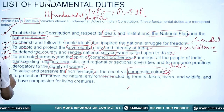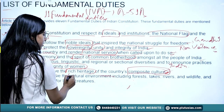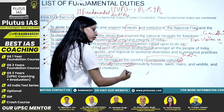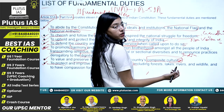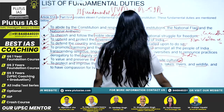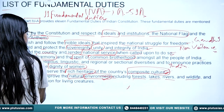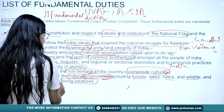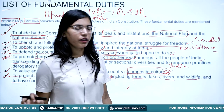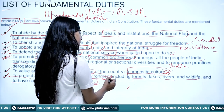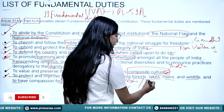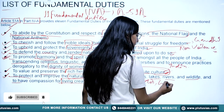The seventh duty is to protect and improve the natural environment, including forests, lakes, rivers, and wildlife, and to have compassion for living creatures. We do not have to disturb the natural balance. We have to maintain our environment clean — air, water. This is our duty.